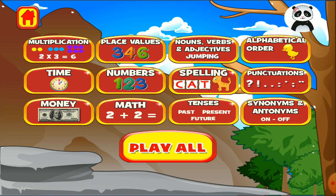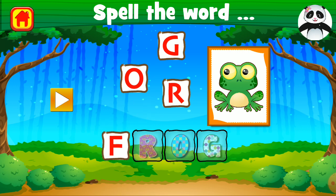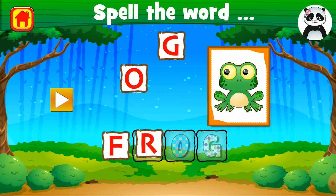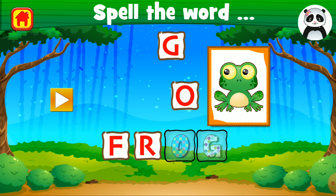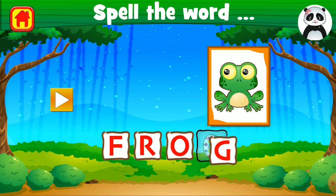Now we should try spelling. Spell the word frog. F, R, O, G — frog.